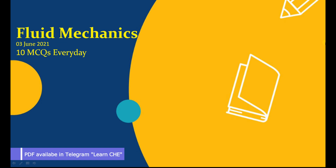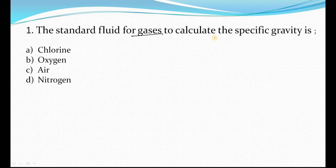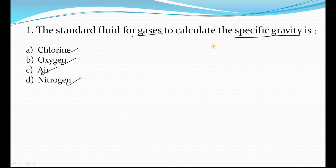Let's start from our first MCQ. The first question is: what is the standard fluid for gases to calculate the specific gravity? The four options are chlorine, oxygen, air, and nitrogen. Please let me know in the comments box which answer is right. Before giving the right answer, you should know about specific gravity. Specific gravity is the ratio of the density of the given fluid divided by the density of the standard fluid.